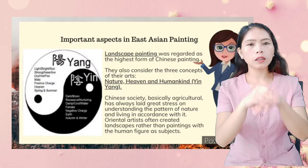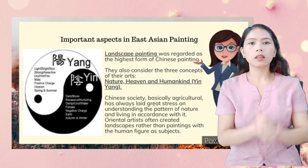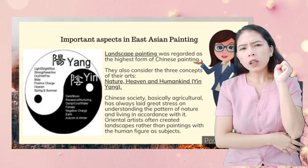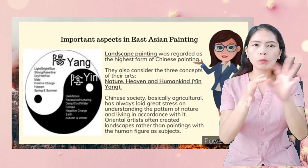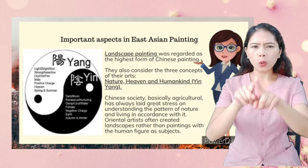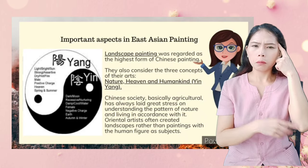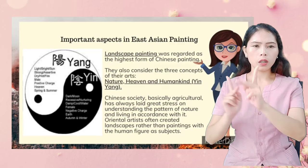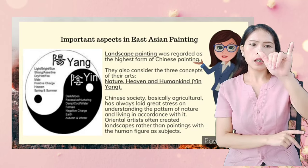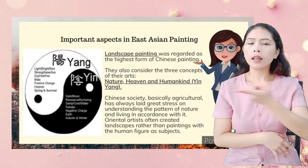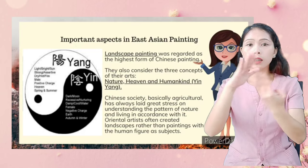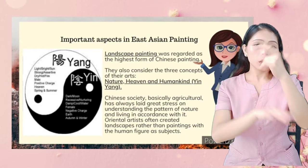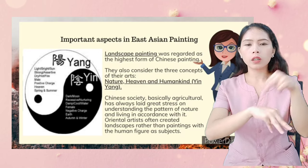An important aspect in East Asian painting: landscape painting was regarded as the highest form of Chinese painting. They also consider three concepts in their arts — nature, heaven, and humankind, or yin-yang. Chinese society has always been agricultural and has laid great stress on understanding the patterns of nature and living in accordance with it.